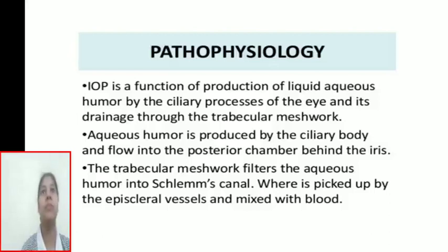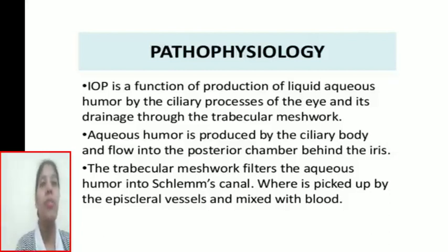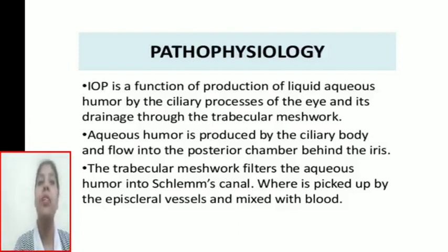Now, pathophysiology. IOP is a function of the production of aqueous humor by the ciliary processes of the eye and its drainage through the trabecular meshwork. Aqueous humor is produced by the ciliary body and flows into the posterior chamber behind the iris. The trabecular meshwork filters the aqueous humor into Schlemm's canal, where it is picked up by the episcleral vessels and mixed with blood.